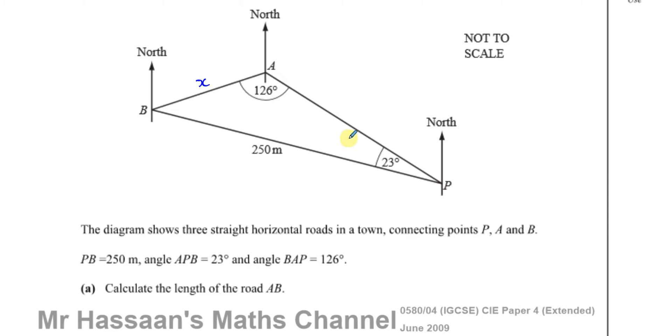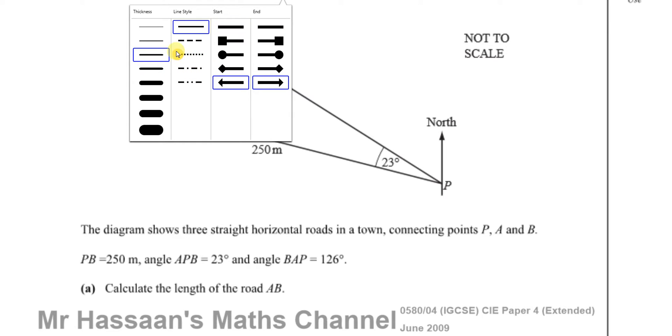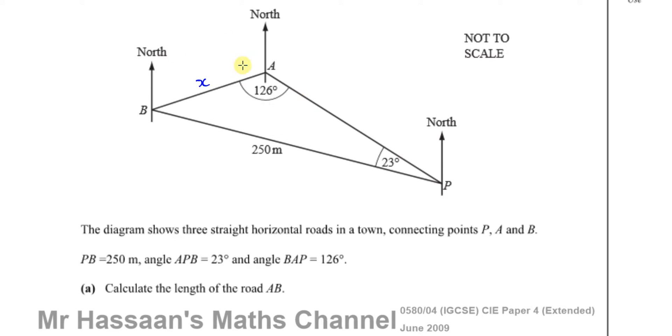Here we have to use trigonometry for non-right angle triangles. We can see we have a pair of opposites: the angle 126 and the side 250. We have another pair of opposites of which there's only one thing we don't know. So this is a classic example of using the sine rule.